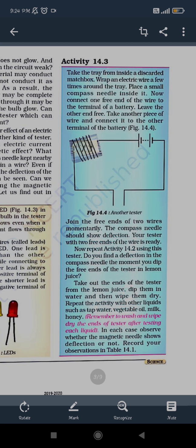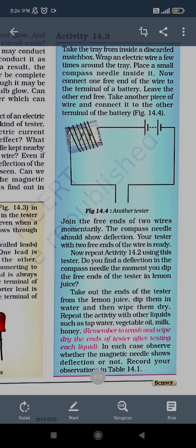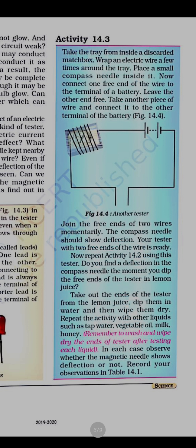Practically, you can try this activity: take the tray from inside a discarded matchbox, wrap an electric wire a few times around the tray, and place a small compass needle inside it. Now connect one free end of the wire to a terminal of the battery, leave the other end free. Take another piece of wire and connect it to the other terminal of the battery, then join the free ends of the two wires momentarily.